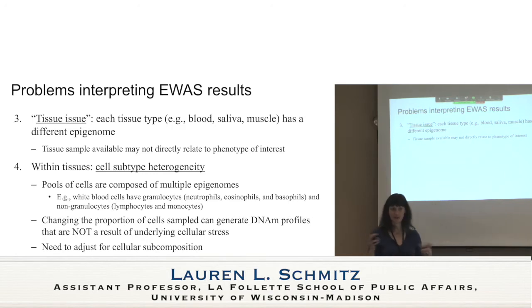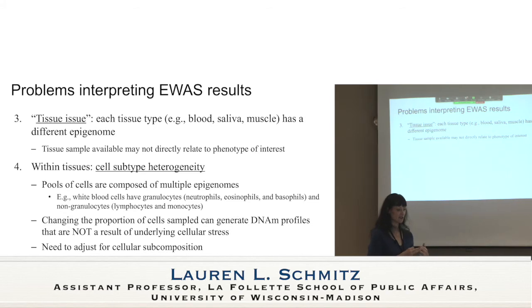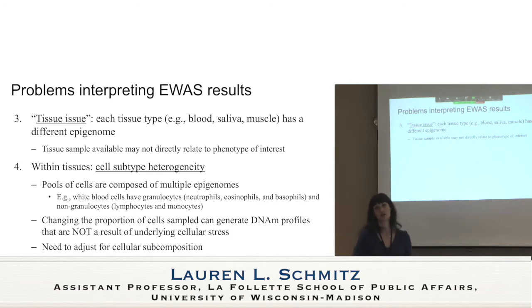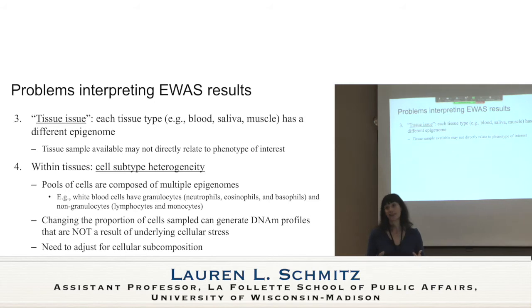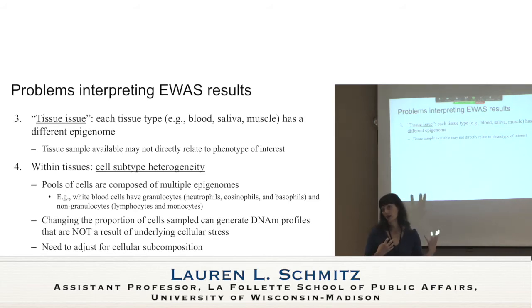There's also the tissue issue — each tissue type, blood, saliva, or muscle, is going to have a different epigenome. The tissue sample available may not directly relate to the phenotype of interest. If we're doing an EWAS of Alzheimer's disease, ideally we would want brain tissue, but that's really hard to get. Usually we're looking at blood, and there's a big question of how much we can see in blood that's actually related to the epigenome of the brain. There are active research efforts — including whole genome bisulfate sequencing approaches — to find blood biomarkers of Alzheimer's disease and dementia-related phenotypes.